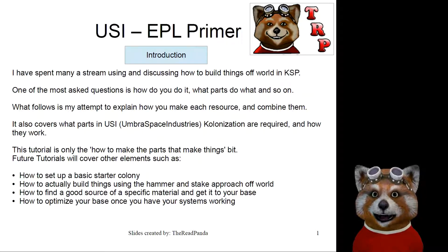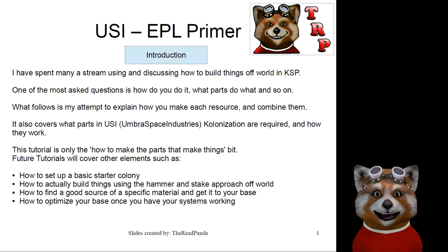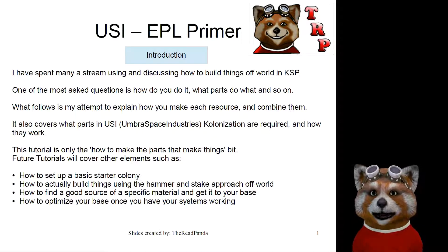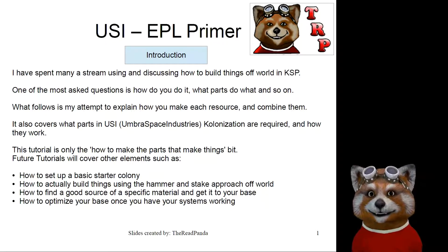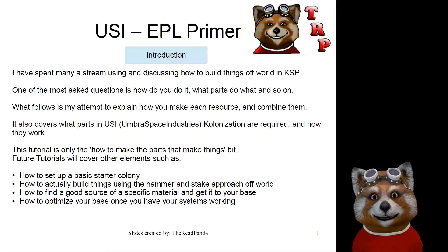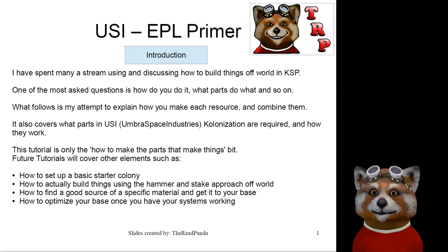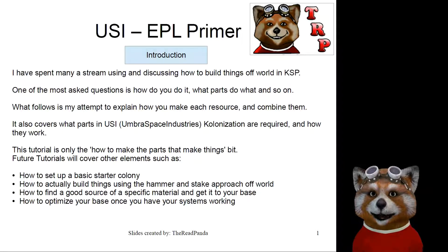I have spent many a stream building things in KSP that are colonies basically, and I like to build things using Extraplanetary Launchpads. Since there's been a major update to Umbral Space Industries so that it now uses material kits and specialized parts, people have asked: how does that work now? So we're going to try to cover some of that.